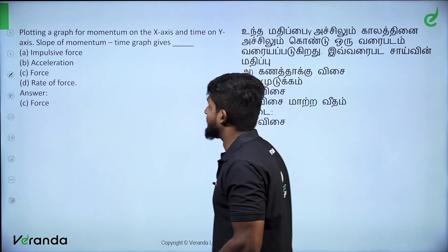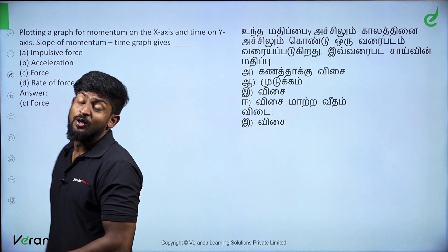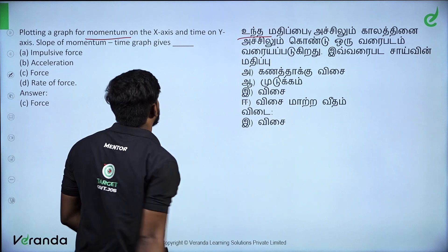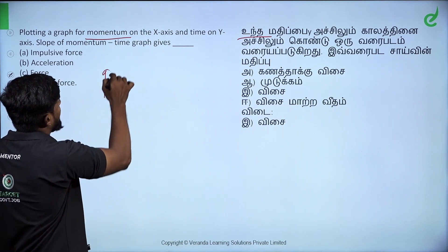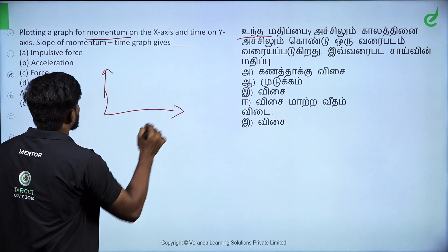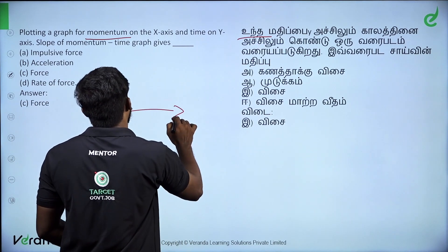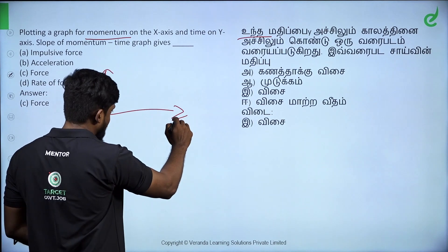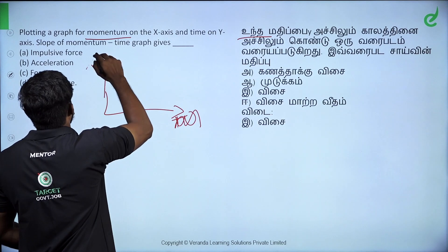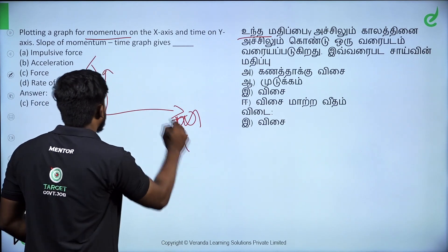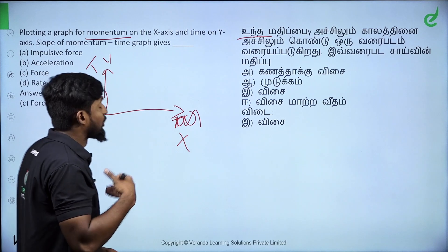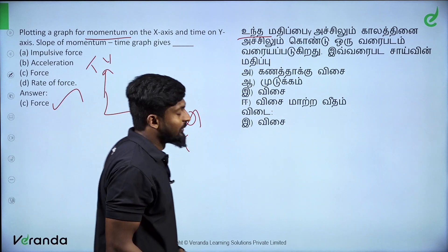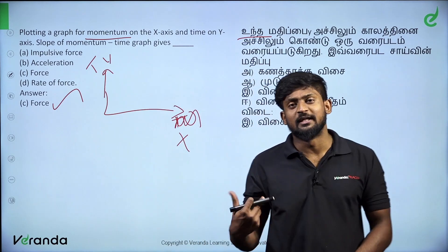Next: plotting a graph for momentum — this is very important. The X-axis is momentum and the Y-axis is time. The slope of the momentum-time graph gives force. So the slope of the graph equals force.